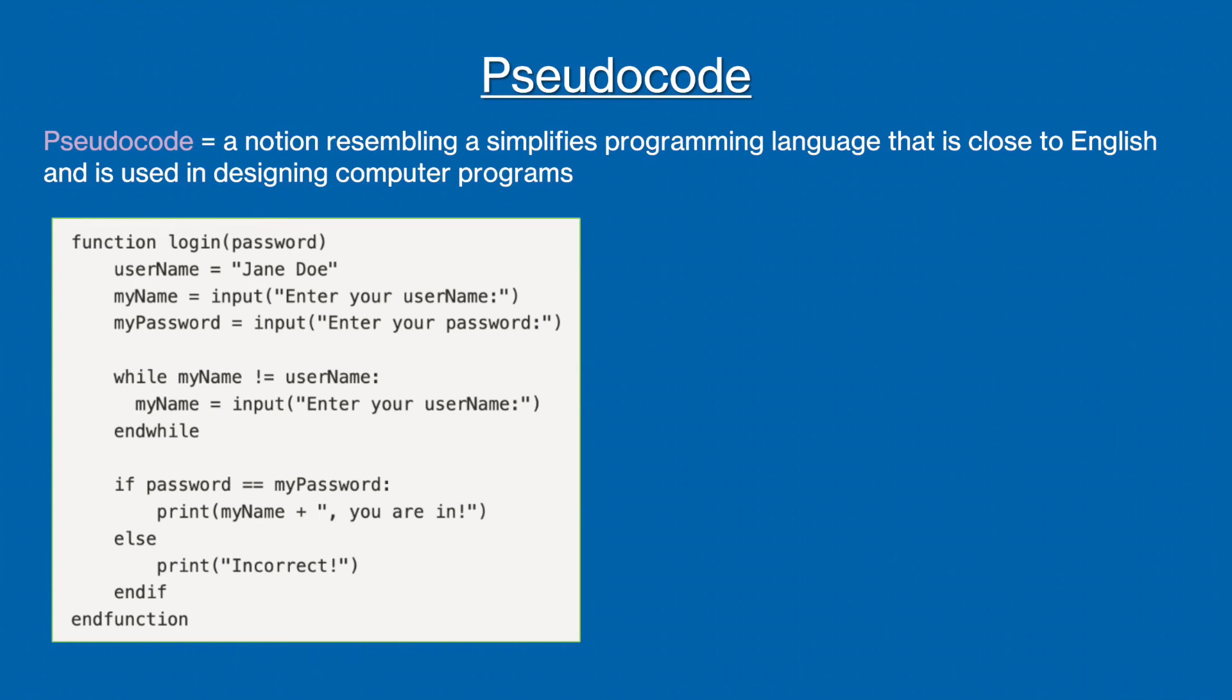Here is an example of pseudocode for an algorithm that allows the user to log in to a system. The program first asks the user to enter their username and password. Using a while loop, the program continually asks the user for their username until it matches the one stored in the system. It then uses an if statement to check to see if the password given matches the password stored in the system. If it does, the program outputs that the user is in, and if it does not match, it outputs incorrect.